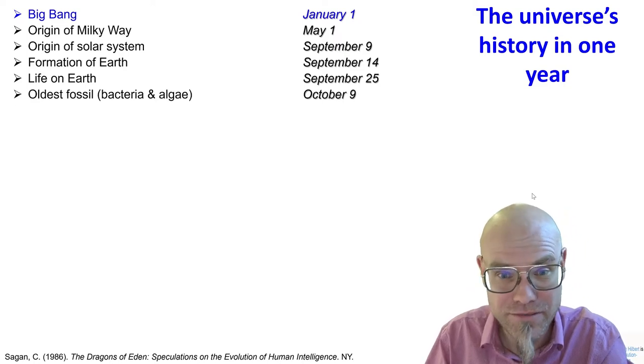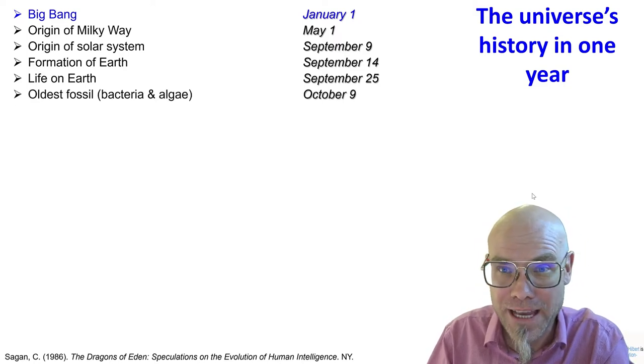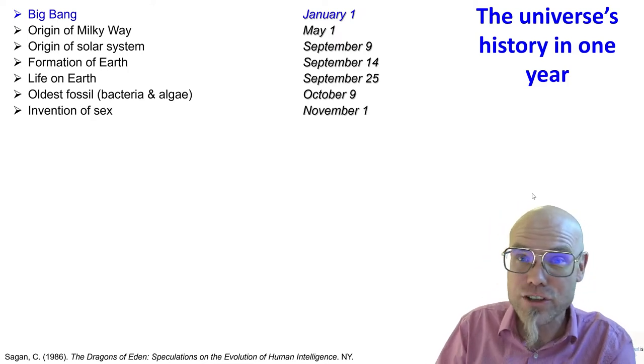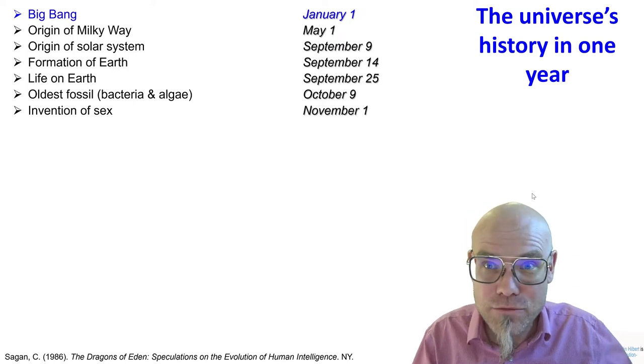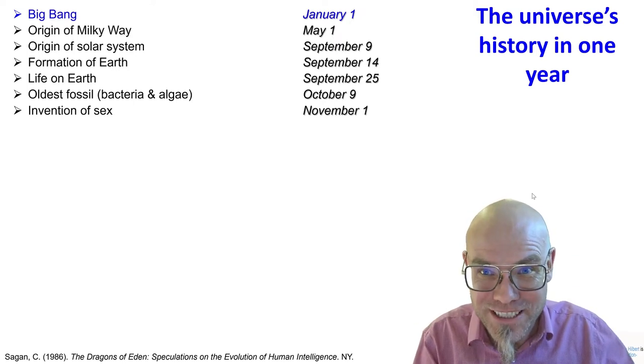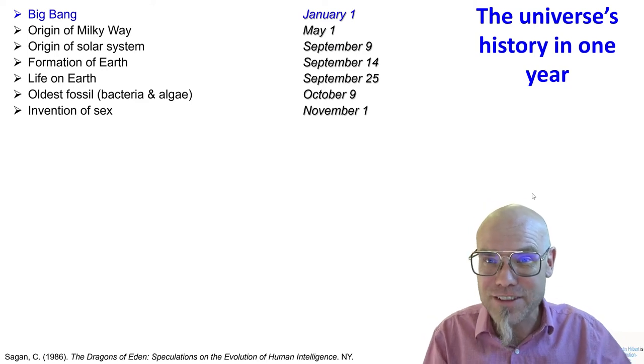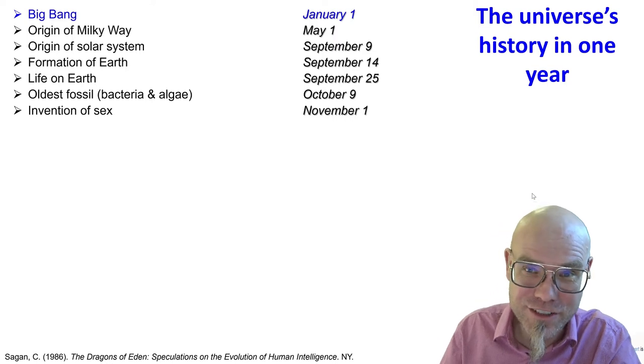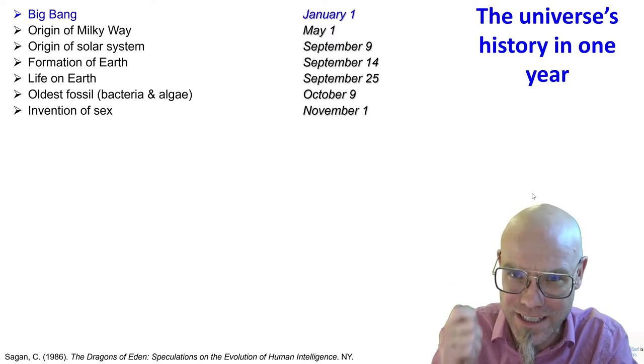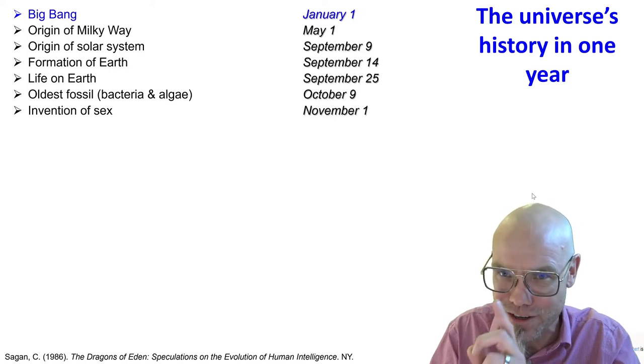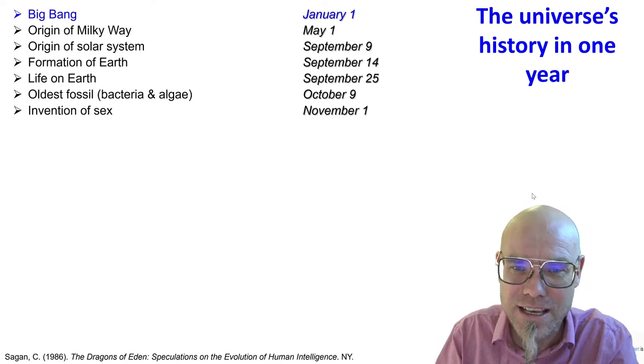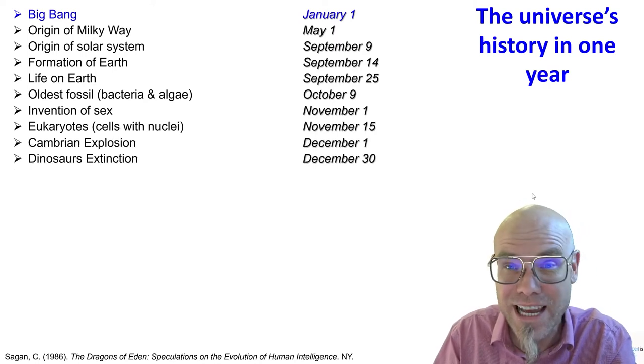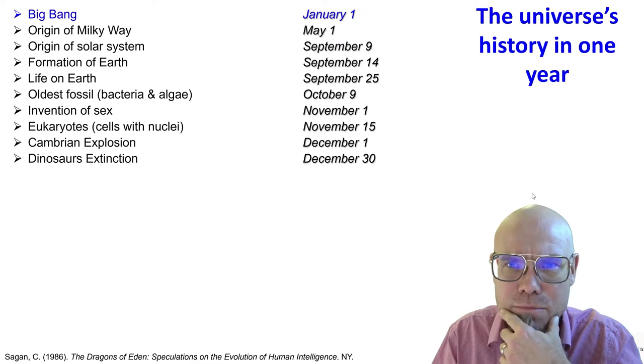The oldest fossil that we found, October 9th. These were bacteria or algae. The invention of sex, very important. Why is sex so important? Because of the recombinations of things. You recombine different things. If you watch the previous lectures on innovation, digital innovation, you know how important it is. That's why sex is really an extremely important thing because it's a combination machinery. New combinations. Well, that came about on November 1st. Eukaryotes, November 15th. Cambrian explosion. The dinosaurs got extinct December 30th.